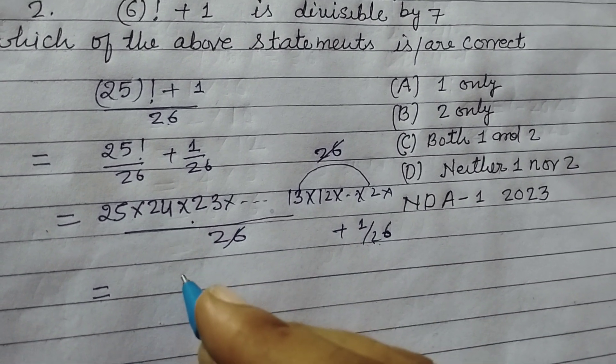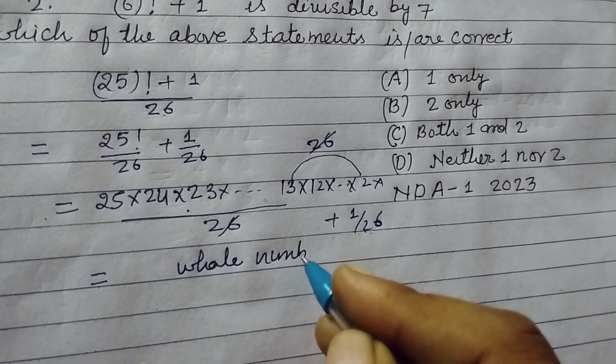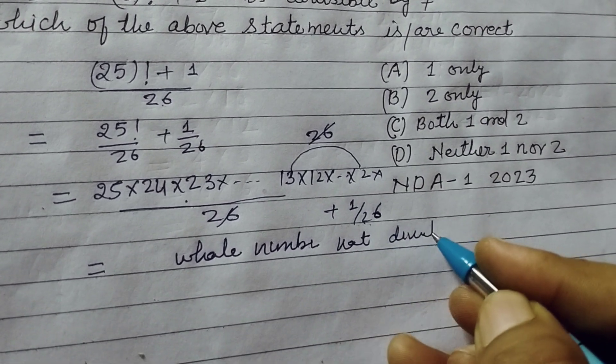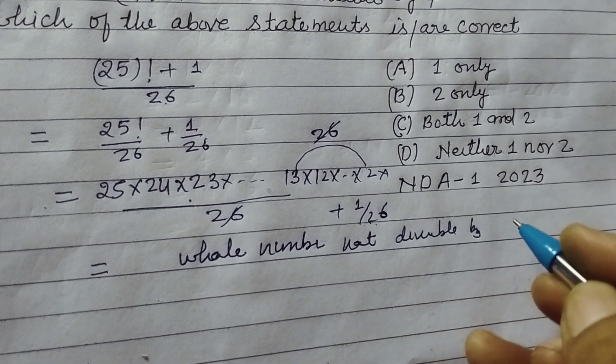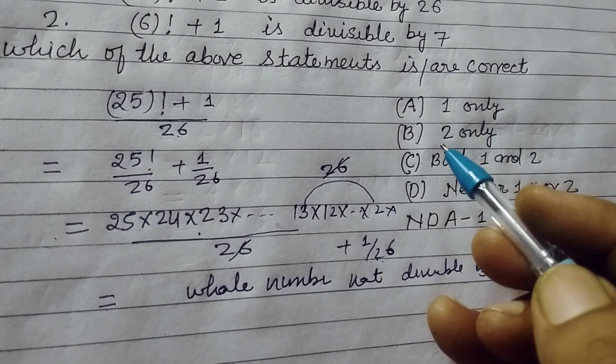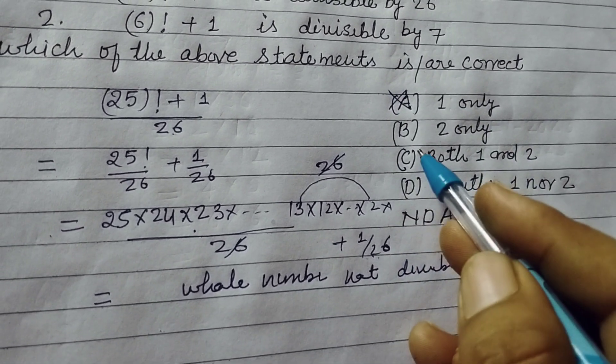Therefore whole number is not divisible by 26. So statement first is not divisible by 26, so statement first is not correct, so this is wrong.